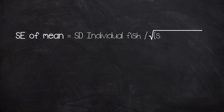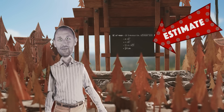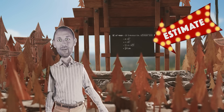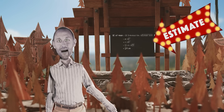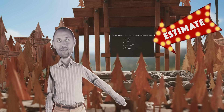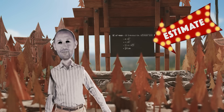Since we don't know the true standard deviation, we will substitute in the sample standard deviation in order to estimate the standard error of the mean. Recall that the standard error of the mean gives us an idea of, typically, how far a sample mean will deviate from the true mean. We would then know what the sampling distribution of the mean would look like under this null assumption that the true mean is 35 centimeters.